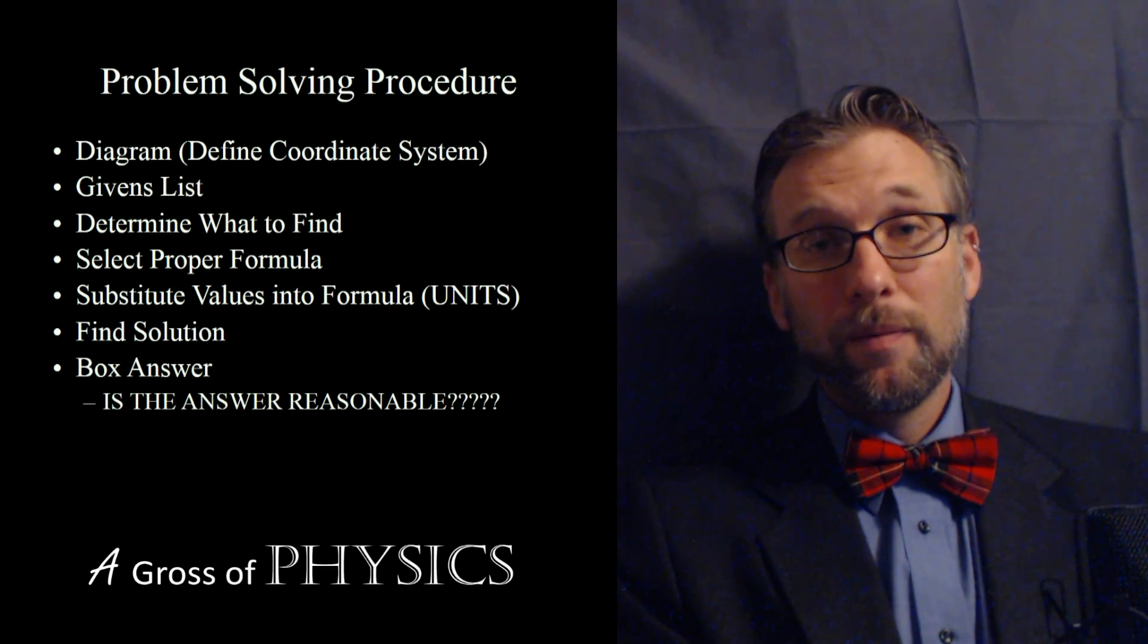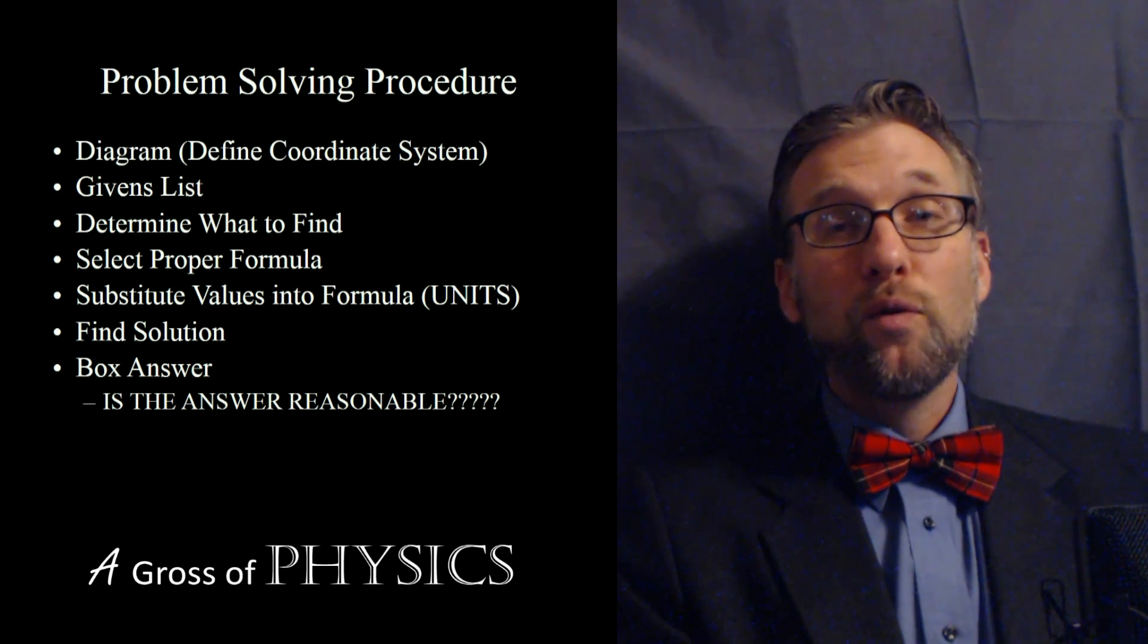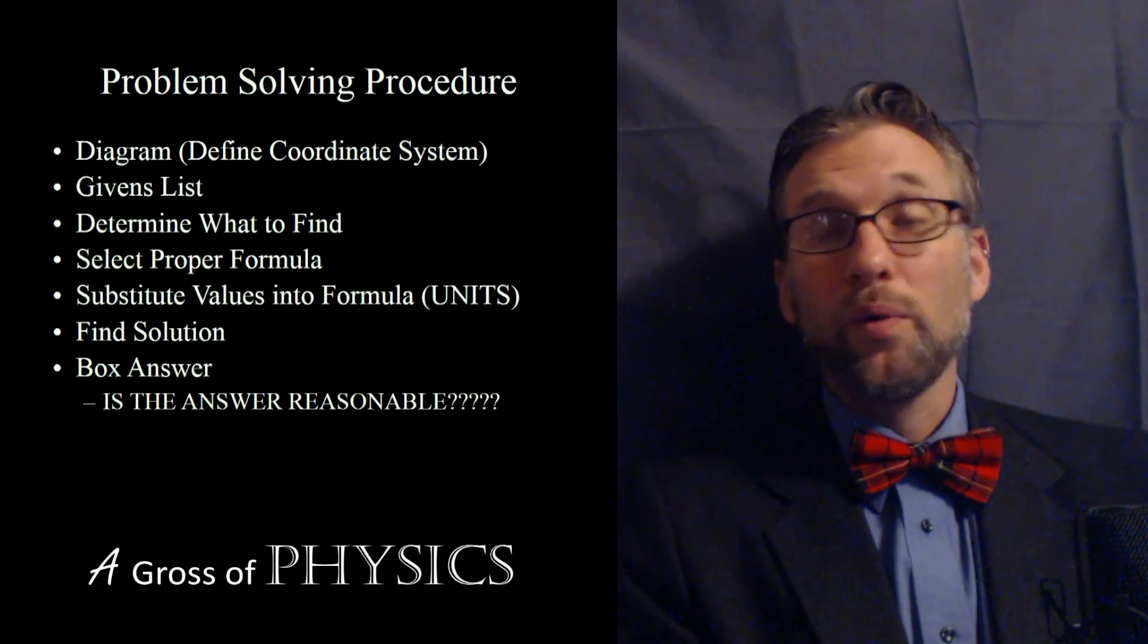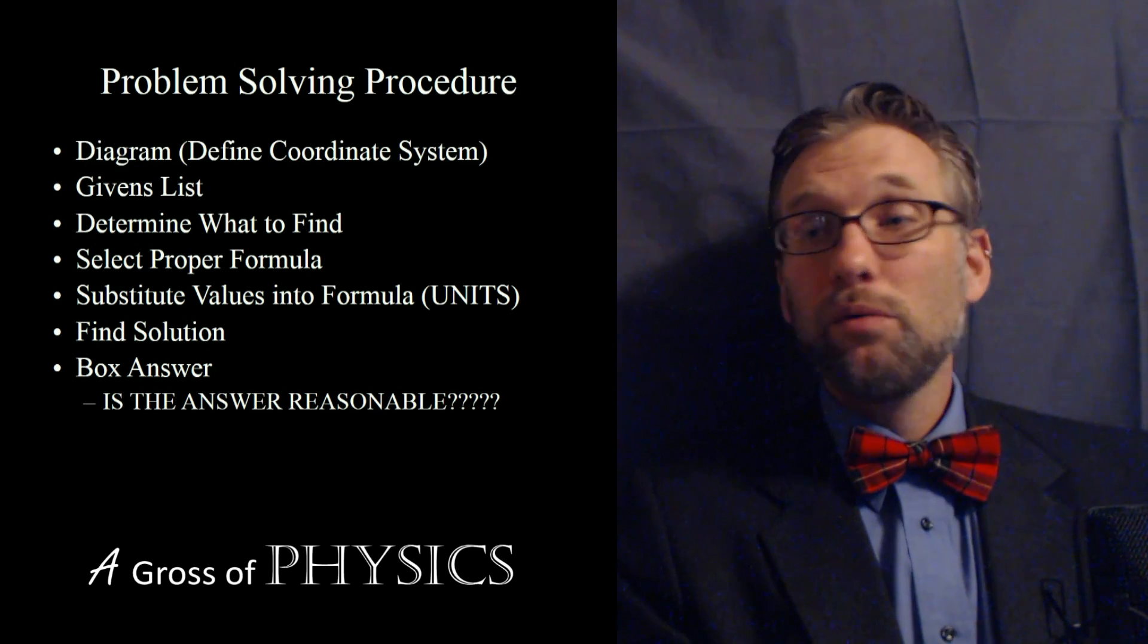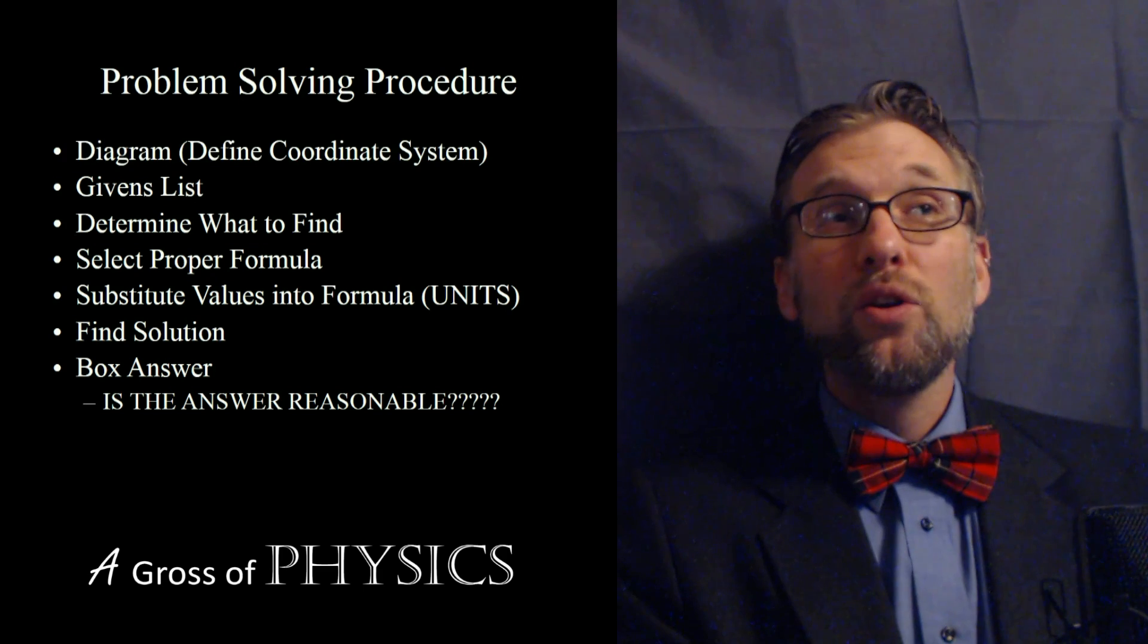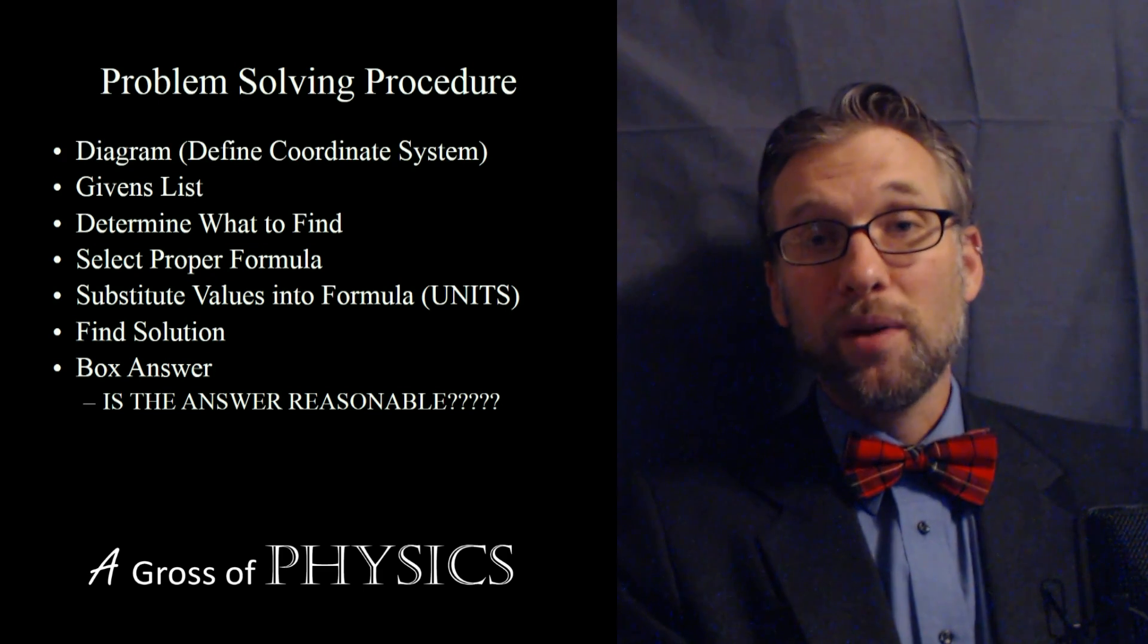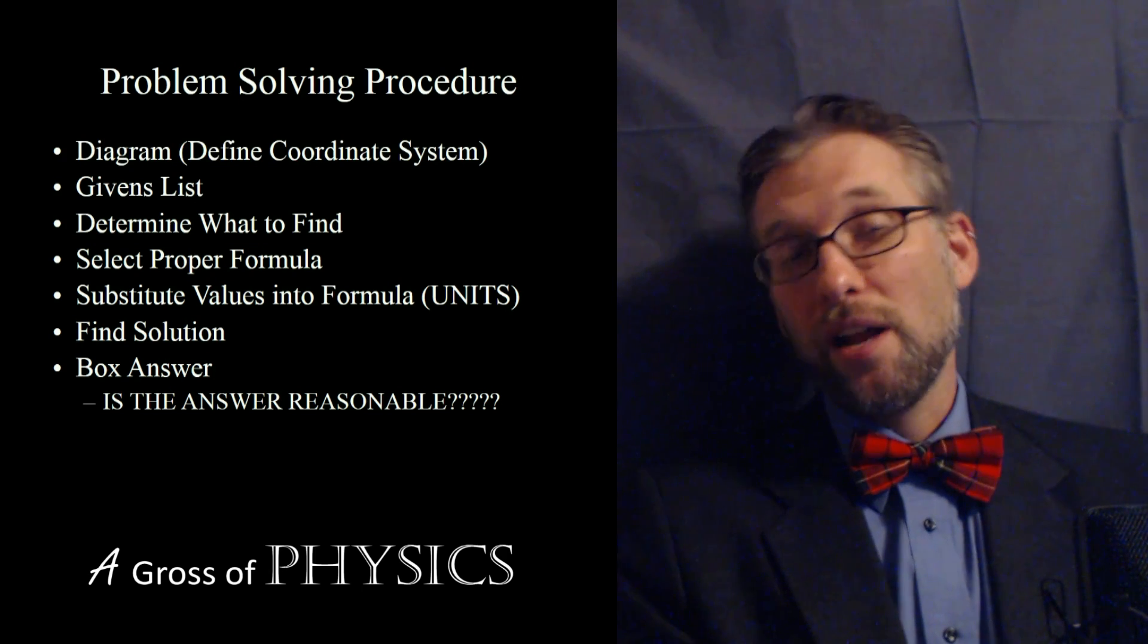After you do that, you write the equation out and you substitute into the equation. The way we substitute is by putting all the variables that we know in for the symbols. If we have VF, we would replace VF with the number. If we have the acceleration, we would replace the acceleration with the number. But what's important to realize is that you also need the unit. When you substitute, I consider it an FSS system: formula, substitution with units, and solution.